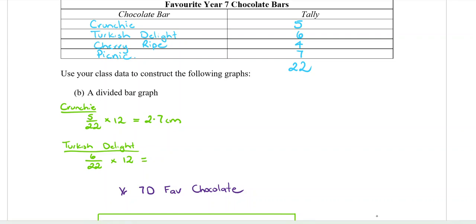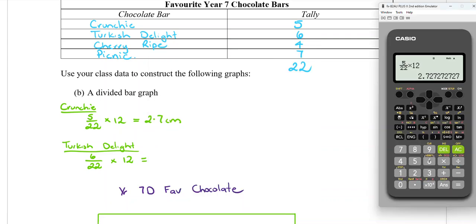In your calculator, 6 over 22 times by 12. Make sure it's a decimal to one decimal place. That would be 3.3.